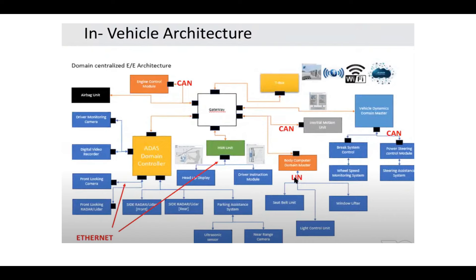This data needs to be transmitted and received at a higher rate because the applications demand it. For example, adaptive cruise control lets us set a specific speed and a distance to be maintained between the ego vehicle and the vehicle ahead. When there is traffic ahead, the adaptive cruise control decelerates and brakes to slow down, and once traffic clears it maintains the set speed.